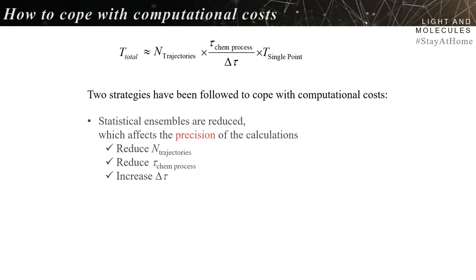The first strategy is to reduce the statistical ensemble, which affects the precision of the calculation. You reduce the number of trajectories, reduce the time of the chemical process so trajectories are shorter, or increase the time step. This impacts the quality of the dynamics, but you know exactly how to fix it — just increase the number of trajectories if needed.